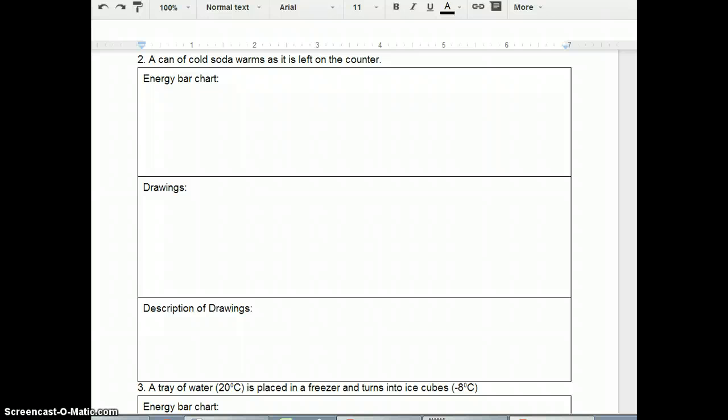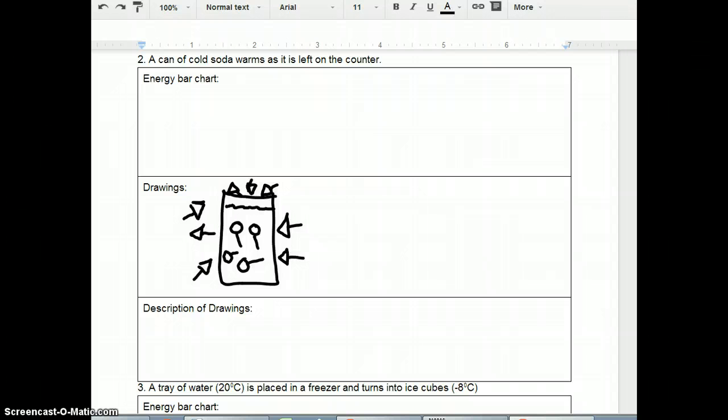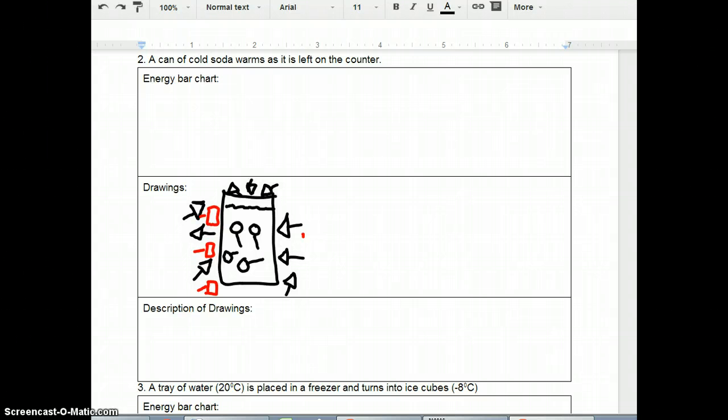Problem number two starts with a can of cold soda that warms as it is left on the counter. So let's start again with our drawing. We've got a can of soda. It's cold, right? And it warms as it's left on the counter. So again, these particles are moving slower, and we've got some air particles outside of the can. We've got some air particles that are outside over here.